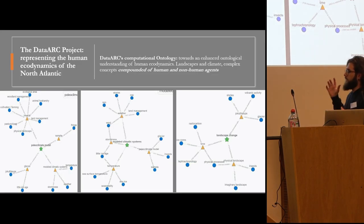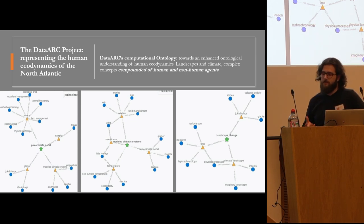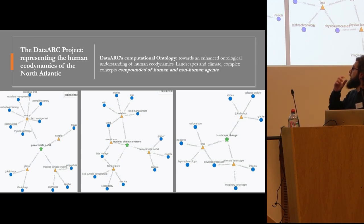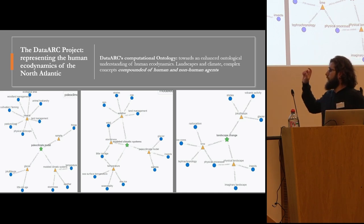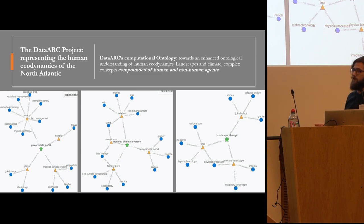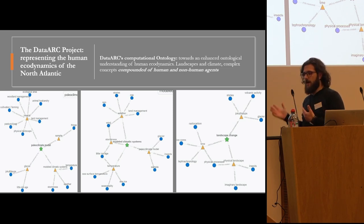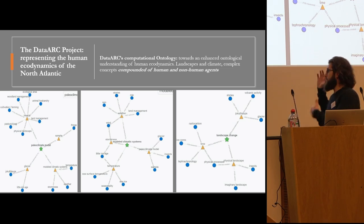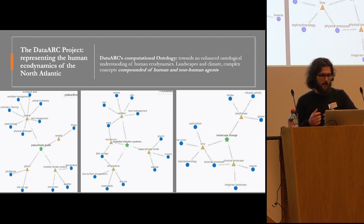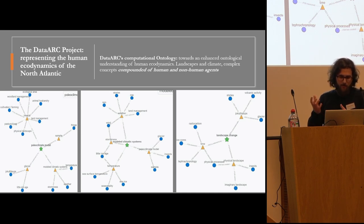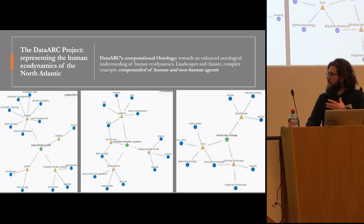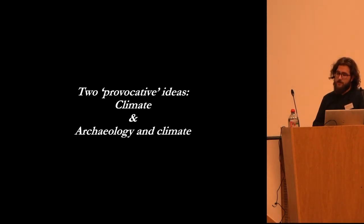I think that it is important to reflect on some concepts that we developed through these different entanglements of agents in the TAR project. As you can see here, these are different concepts such as climate, paleoclimate model, or landscape. These concepts are not abstract, but rather what we express with this representation is that they are complex, entangled concepts that are compounded of human and non-human agents. And I think that it is a good way of connecting with the next part of the presentation, in which I want to present two provocative ideas: one is climate, and the other is archaeology and climate.